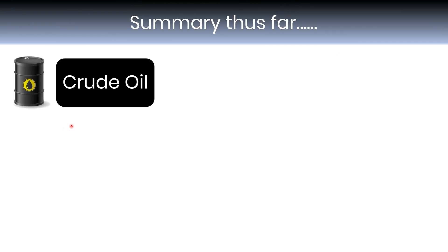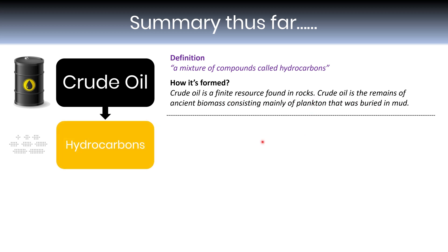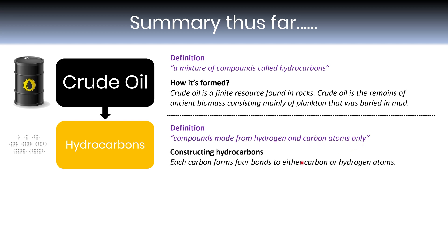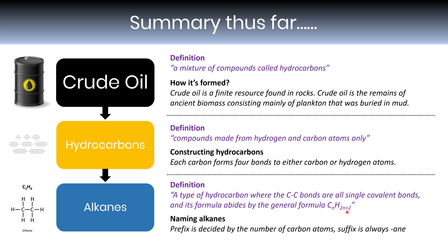Let's summarise what we've learnt so far. Crude oil: its definition is a mixture of compounds called hydrocarbons, formed by the remains of ancient biomass consisting mainly of plankton that was buried in mud — a finite resource found in rocks. Hydrocarbons are compounds made from hydrogen and carbon atoms only, where each carbon forms four covalent bonds to either carbon or hydrogen atoms. Some hydrocarbons can be called alkanes, which must satisfy two criteria: all C-C bonds are single covalent bonds, and the formula abides by the general formula CnH2n+2. When naming alkanes, the prefix is decided by the number of carbon atoms and the suffix is always 'ane'.